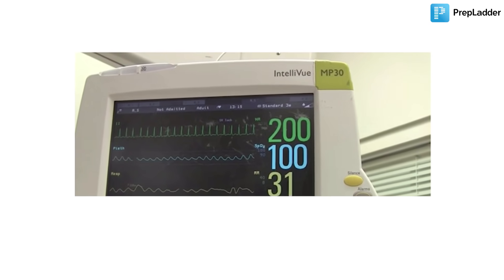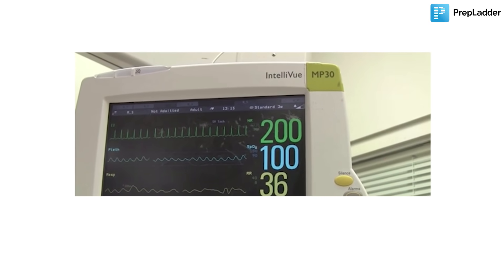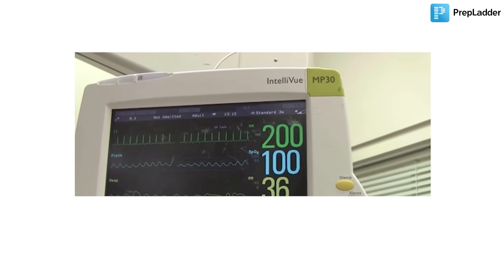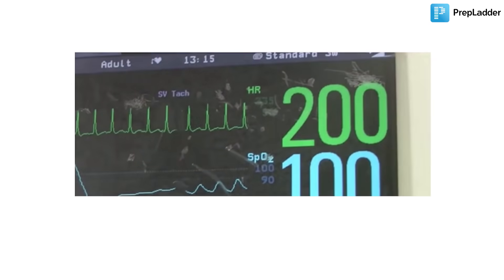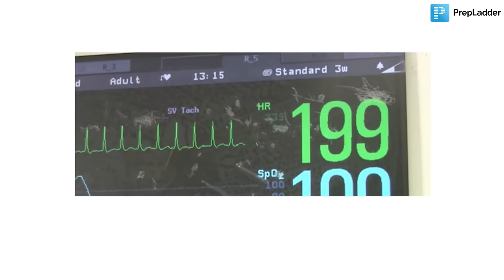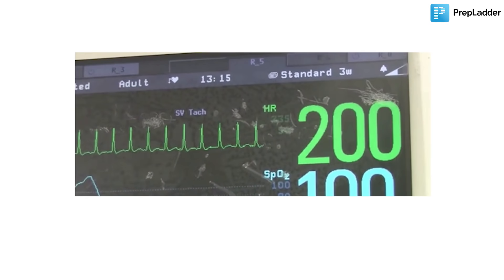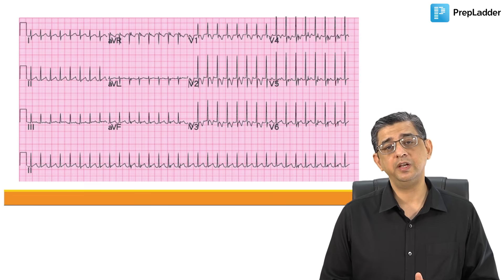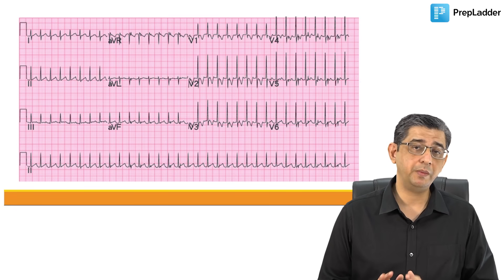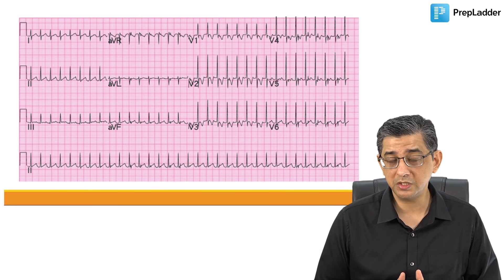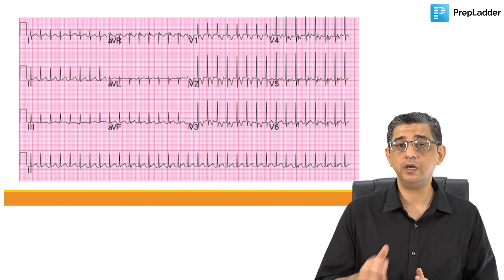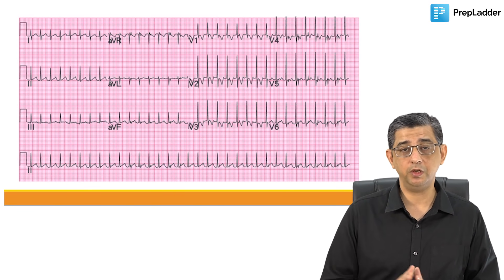Let me explain what it really means and why it was happening in this patient. When we hooked him to the monitor, you can notice a heart rate of 200 and a narrow complex tachycardia with a mild ST segment depression. That mild ST segment depression was primarily present because of global myocardial ischemia, because the heart is going to be beating very very fast.